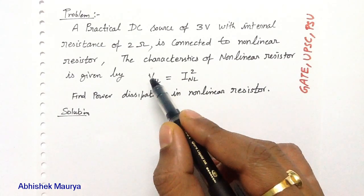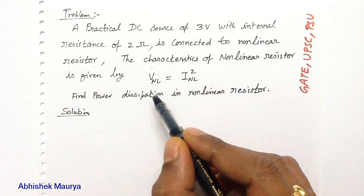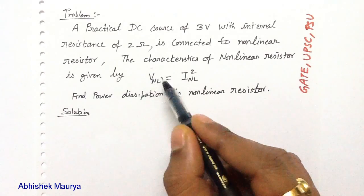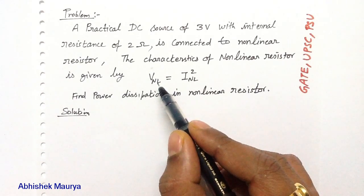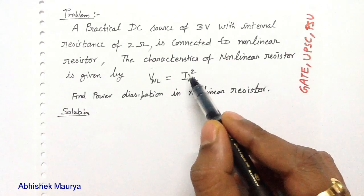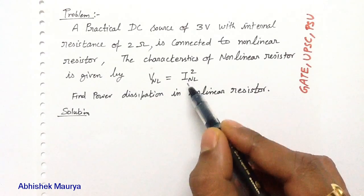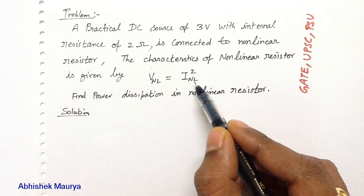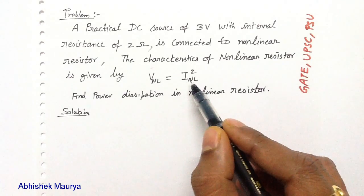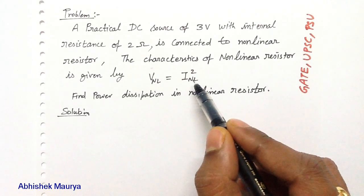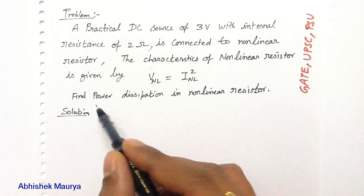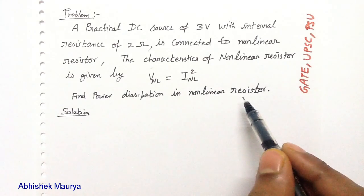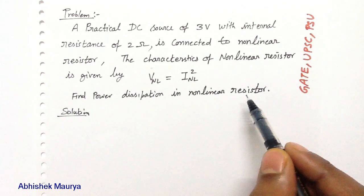V_NL is the voltage drop across the non-linear resistor, and I_NL is the current flowing through the non-linear resistor. We have to calculate the power dissipation in the non-linear resistor.